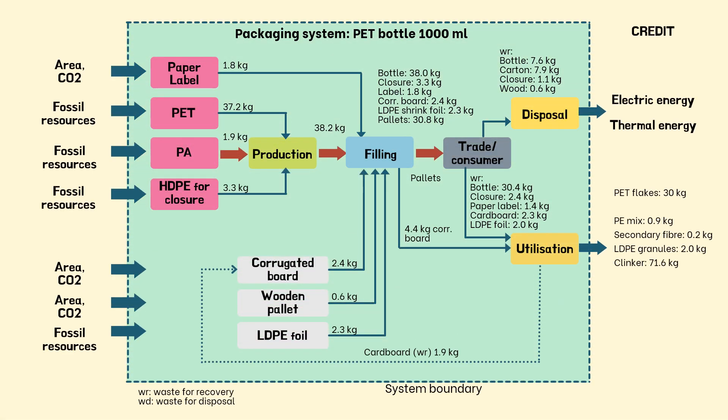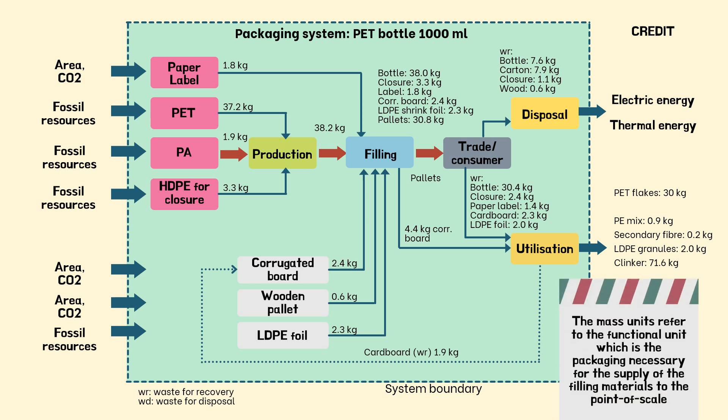Here is the example of the simplified system flow chart of a packaging system for 1000 milliliters of PET bottle, covering the reference flows. The mass units refer to the functional unit, which is the packaging necessary for the supply of the filling materials to the point of sale.